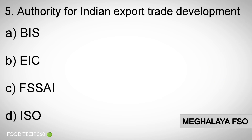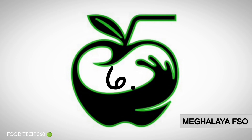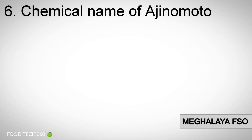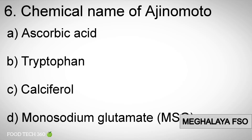Correct answer: B) EIC. Question number 6: Chemical name of Ajinomoto — options: A) ascorbic acid, B) tryptophan, C) calciferol, D) monosodium glutamate.